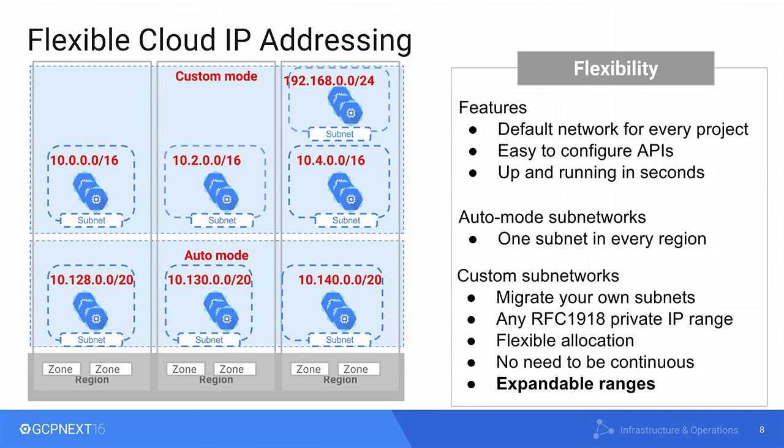And these sub-networks are expandable — that's very important. For example, if you created a sub-network range of /24 and the number of VMs increased due to increased load, with the click of a button you can change the sub-network, increasing it from /24 to /20, and you can go all the way up to /9 if you want.